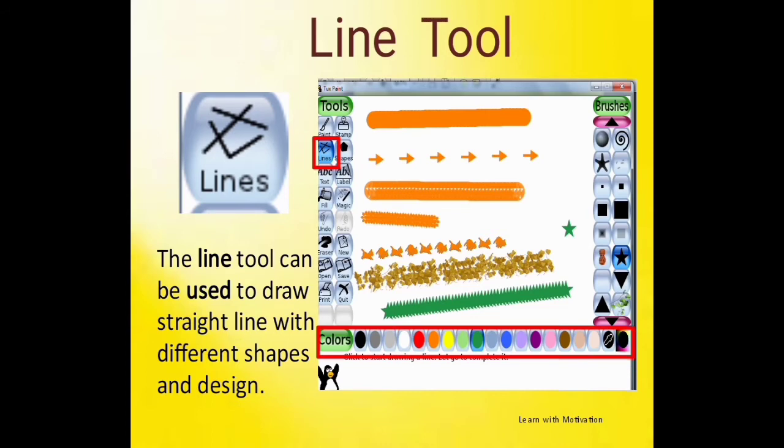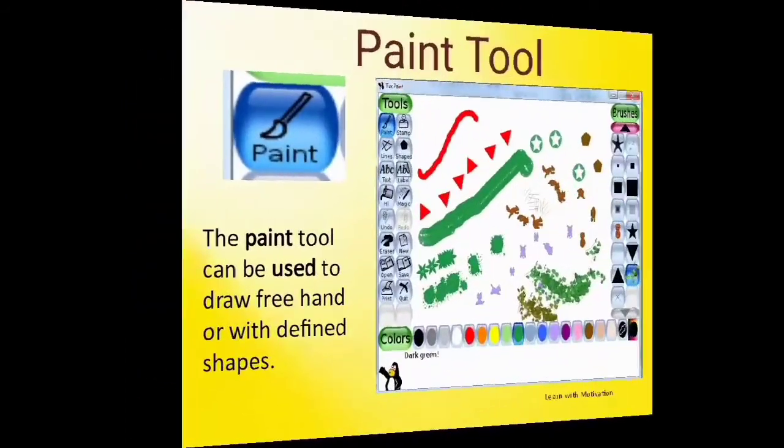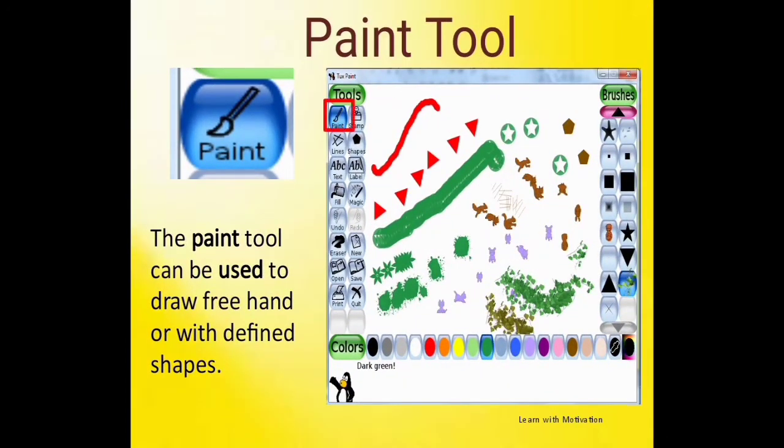Next tool is paint tool. You can select from the left hand side paint tool. The paint tool can be used to draw freehand drawings. You can select the brush and color and draw. Here you can draw straight lines, or you can draw with the brush. I have shown you some patterns here.